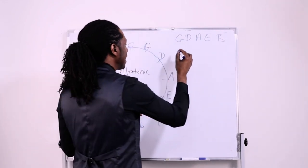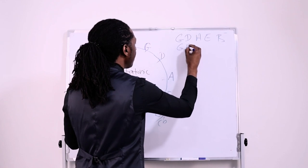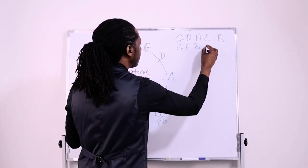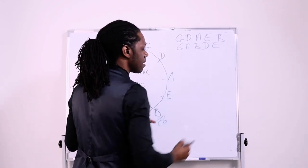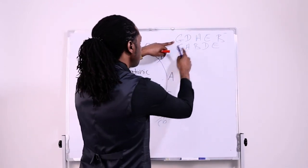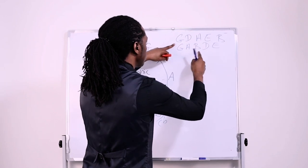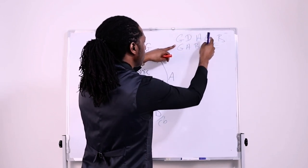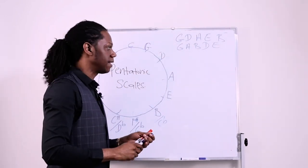If we reorganize it, it's going to be G, A, B, D, E. See the pattern? Okay, G, skip, go to A, skip A, go to B, then you come back to D, and then you go to E. Okay, and that's that.